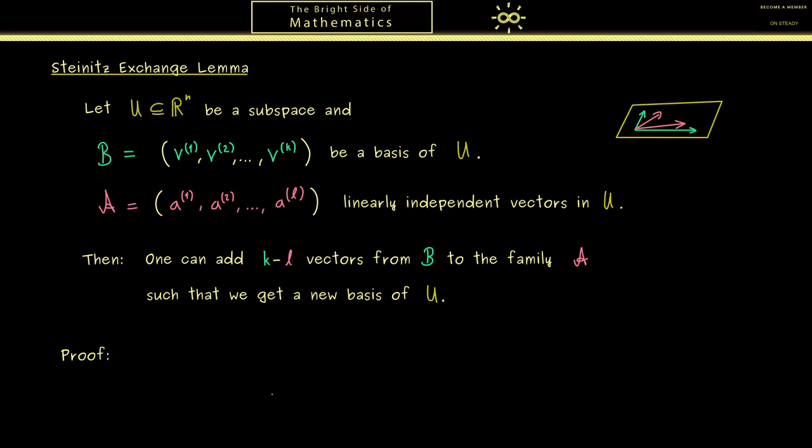Okay, then for the rest of the video I would say I give you the idea how to prove this statement here. So formally, what you can do here is a proof by induction. And in order to give you the idea how to do this proof, I show you the case that l is equal to one in all details. Indeed, the idea here is that we just form the union with B and A. Of course, when I write the union for families, I just mean the extended family here. In other words, we first have the v vectors and then the a vectors. And in our case here, we just have one a vector.